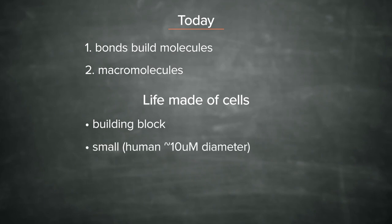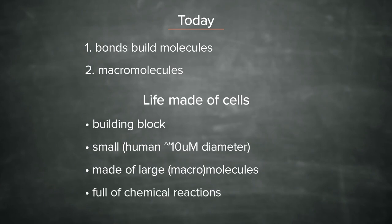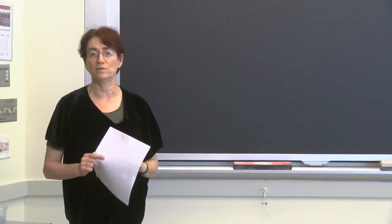In humans, a cell has about a 10 micrometer diameter. They are filled with molecules, or they're made of molecules. And I'll tell you about the molecules as we go along. And they are a bag of chemical reactions. So that's our background. That's the framework that we're going to start with today.